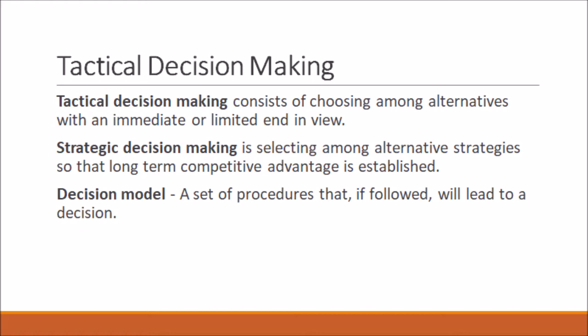Second, strategic decision making is selecting among alternatives so that long-term competitive advantage is established. Examples of this include whether to make or buy a product, whether to add or retain a product, whether to shut down or continue operations, and many other alternative decisions. We will discuss this thoroughly as we move along.